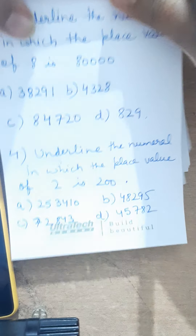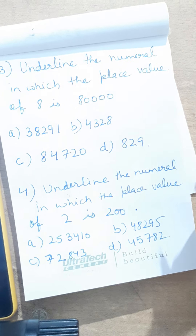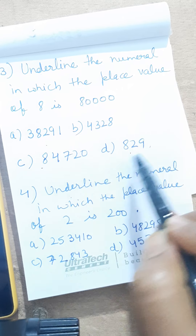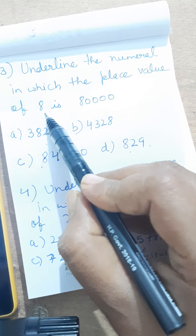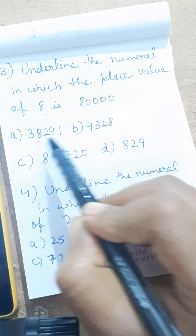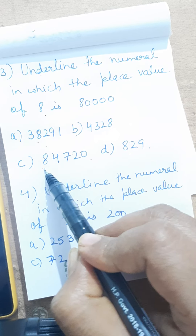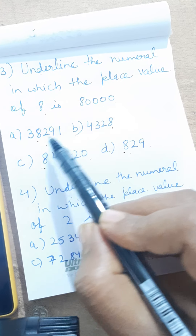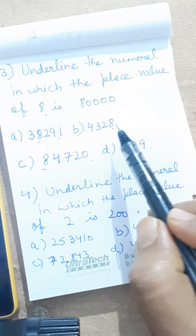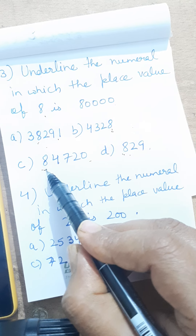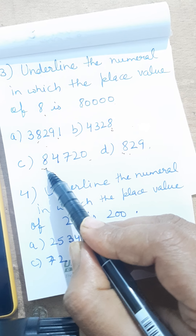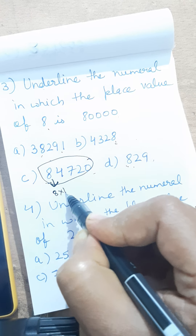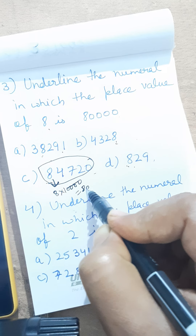The same way, question number 3: underline the numeral in which the place value of 8 is 80,000. Aapko yahan 4 numbers diye hain aur in numbers mein aapko woh number dhunna hai jis mein 8 ki value 80,000 ho. Dekho, har number mein 8 hai. Toh aapko sirf us number ko circle karna hai jahan 8 ki value 80,000 niklegi. Yahan 8 ki value kya niklegi? 8,000. Yahan 8 ki value kya hai? 8 ones are 8. Aur yahan 8 kaunse place per hai? 10,000 place per. Toh 8 into 10,000 — that is 80,000.